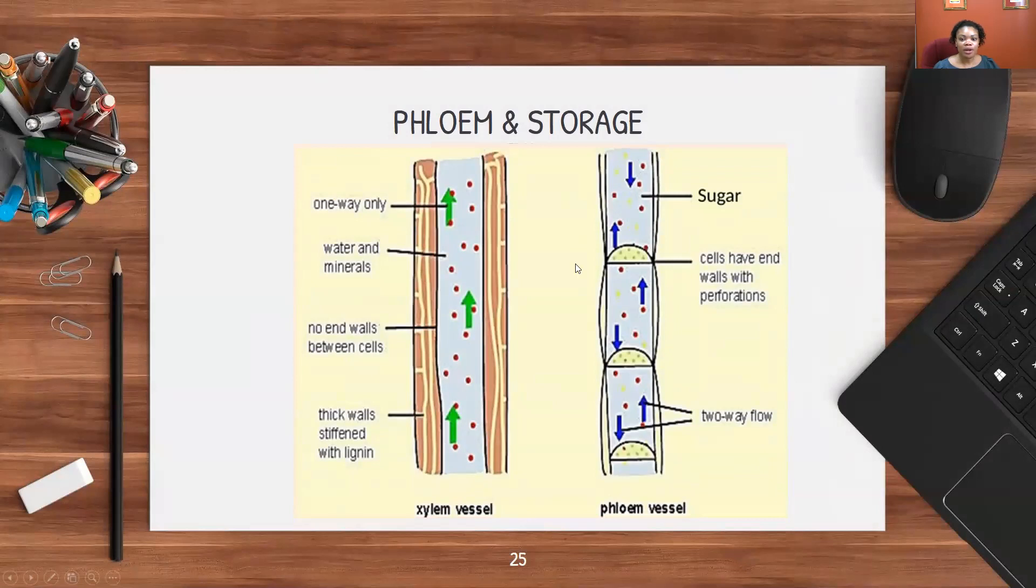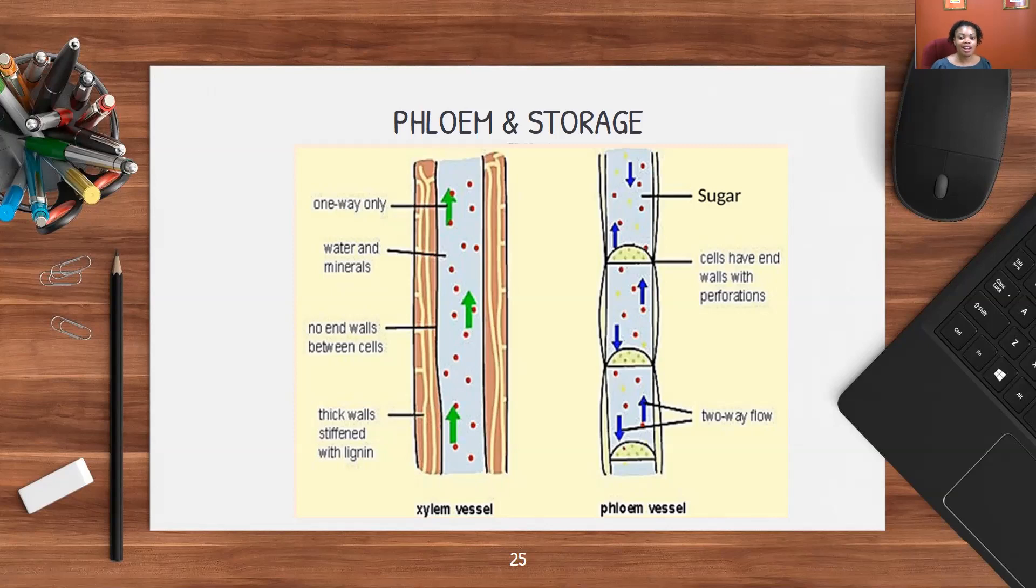In the xylem vessel, if we're comparing the two, the flow of water and minerals is one direction, going from the root to the tip, to the leaves, going upward. Water and minerals are moving that way. There are no end walls, so nothing to separate. It's just a long column, long tube, no end walls, no distinction between the cells. But the walls are thick and stiffened with lignin, which provides strength and ensures that it doesn't break, because it's carrying a large volume of water against gravity. The thickened, stiffened walls with the lignin prevent the column from breaking. As opposed to the phloem vessel, the direction of flow is two-way, so it can go in either direction, moving sugar and other organic compounds, and the cells have end walls with perforations. That's a sieve plate.